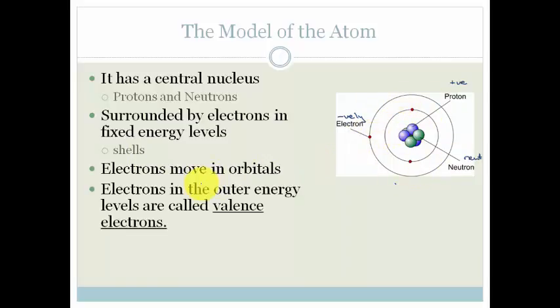The electrons in the outer energy levels are called valence electrons. These valence electrons are important because these are the electrons that are involved in bonding. The only reason why molecules are able to be formed is because of these valence electrons bonding.